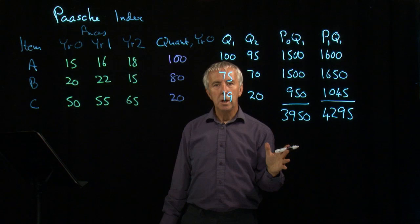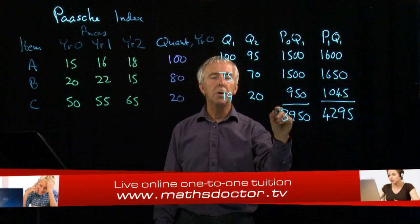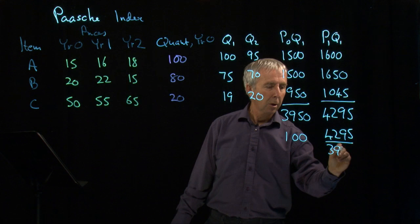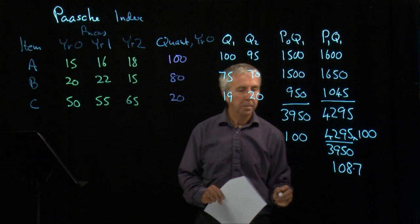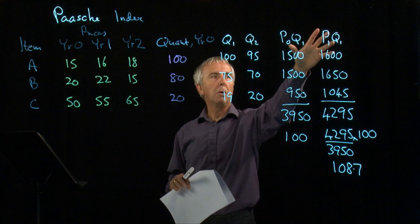So 4,295 is the actual spend in year one — year one quantities, year one prices. We're then comparing that backwards with year zero, computed using the quantities in our current year. Calling year zero 100, we get 4,295 over 3,950 times 100, which comes out at 108.7. That's slightly different to when we did the same calculation with Laspeyres, which uses quantities for year zero throughout.